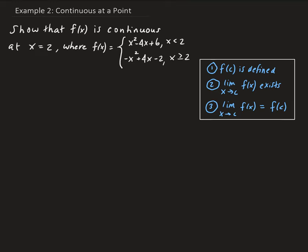In this example, we want to show that the function is continuous at x equals 2. The function we have is a piecewise function. In order to show this function is continuous at 2, we need to use the formal definition. We need to show that the function evaluated at 2 is defined,